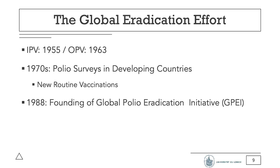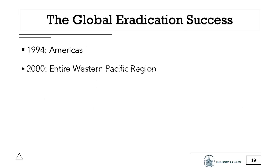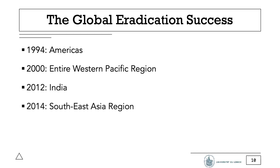By then, there were still cases in 125 countries all over the world. By 1994, polio had been eradicated from the entire Americas. By 2000, 550 million children, or 10% of the entire world population, had been immunized, and the entire Western Pacific region, from Australia to China, was considered free of polio. Finally, by 2012, India had passed one year without a single recorded case of polio. Once three years had passed, it received the official certificate by the WHO, and from then on, the entire Southeast Asian region was considered free of polio.